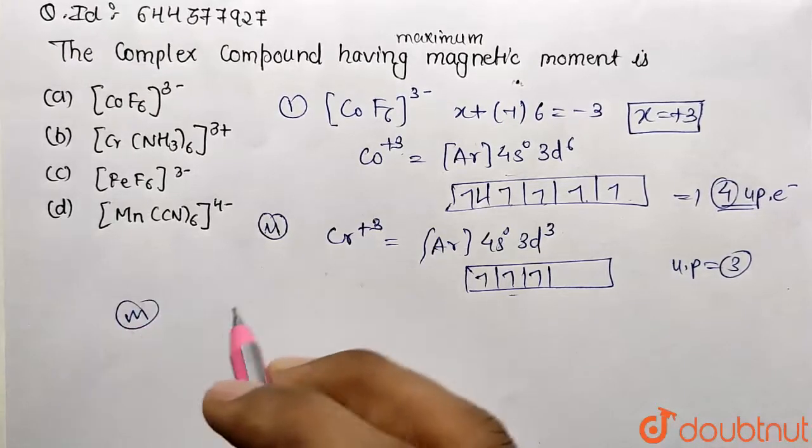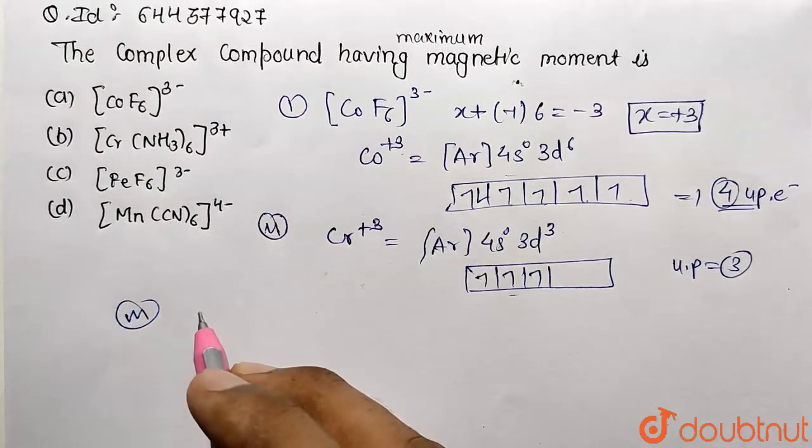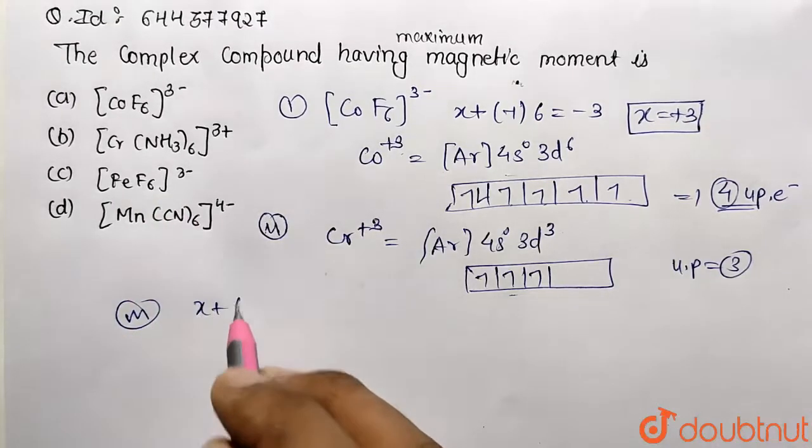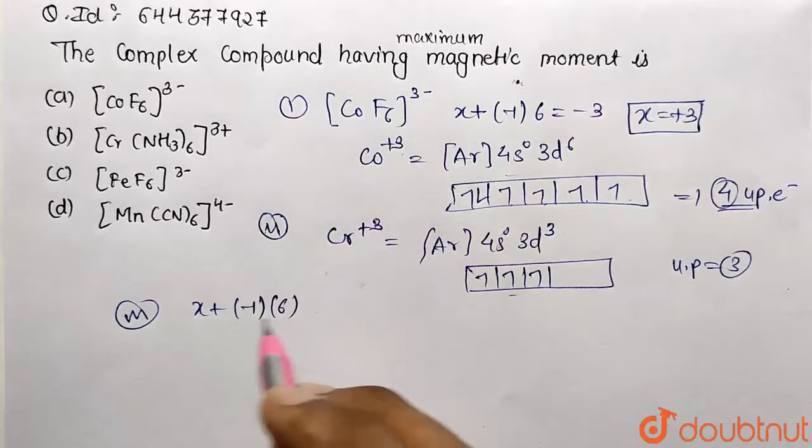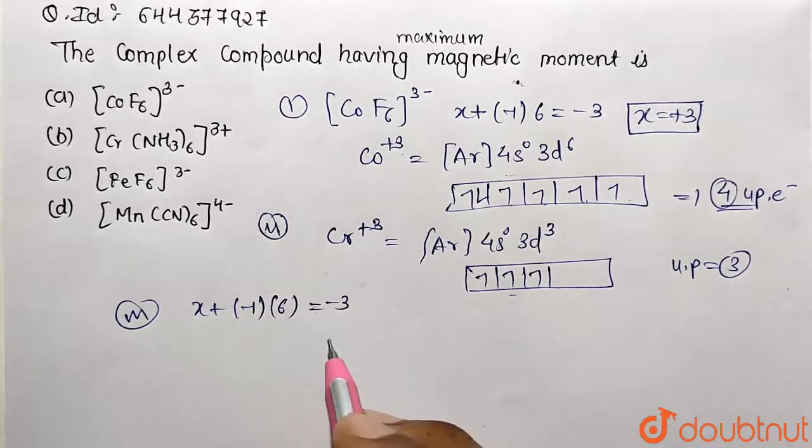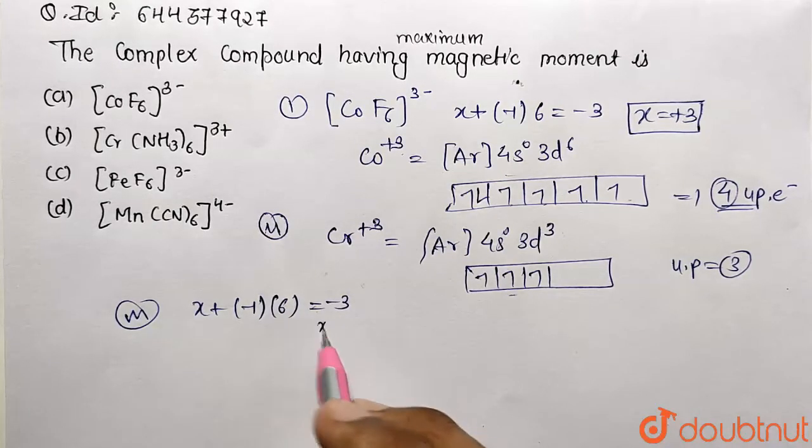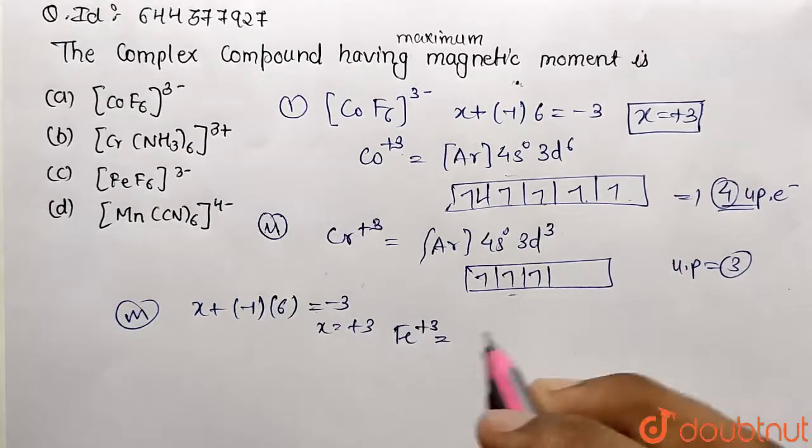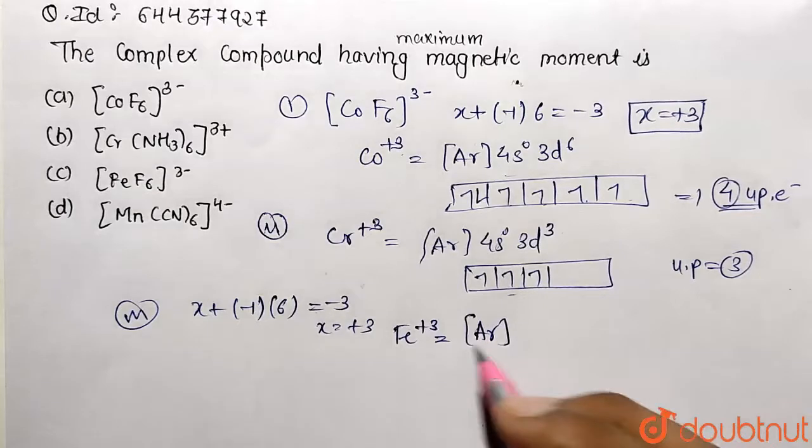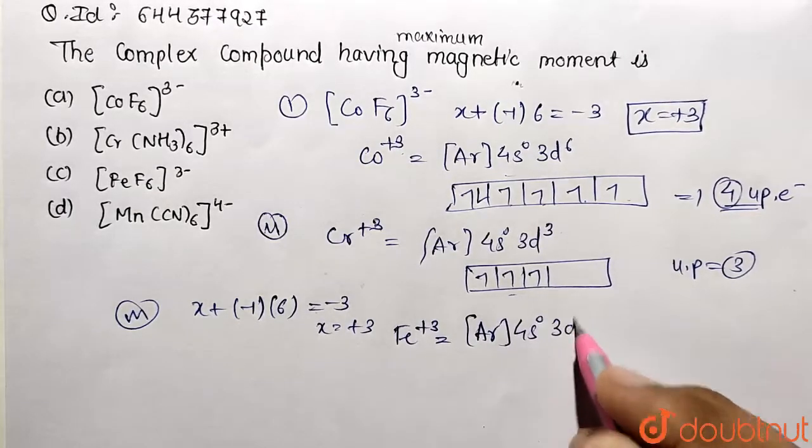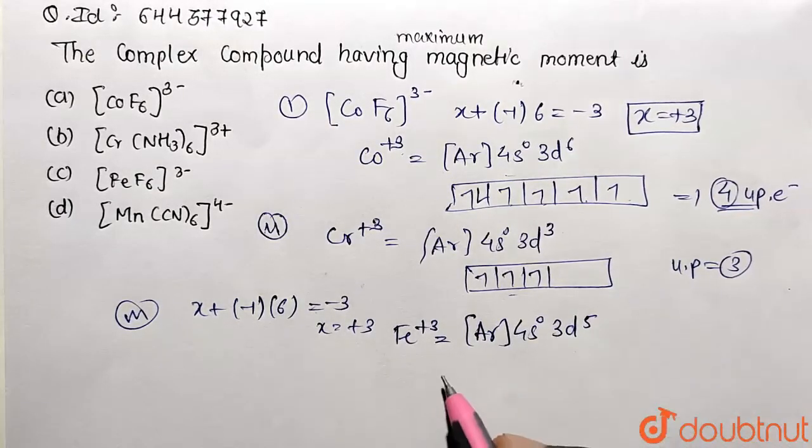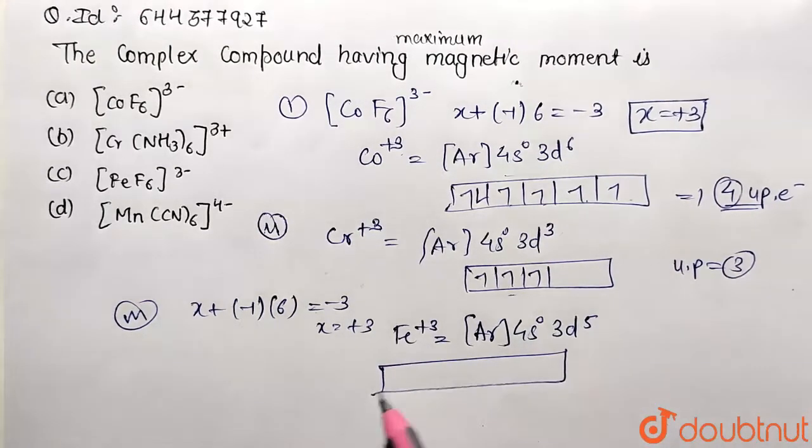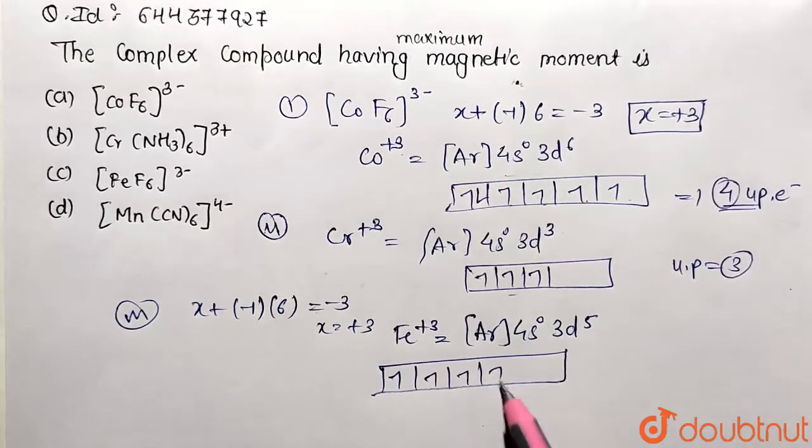Similarly, for the third complex [Fe(CN)6]³⁻, calculate the oxidation state. CN is a negative ligand, so -1 multiplied by 6 equals -3. The value turns out to be positive 3. Can you represent the third ionization state of iron? It's argon, 4s will be 0, and we are left with 3d⁵. How do you represent 5? 1, 2, 3, 4, 5.